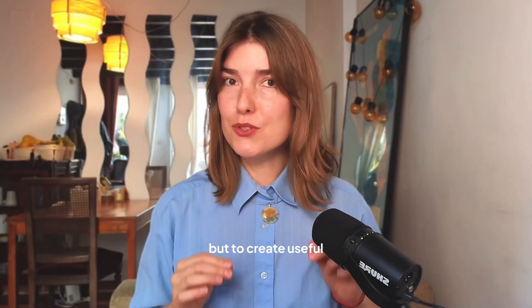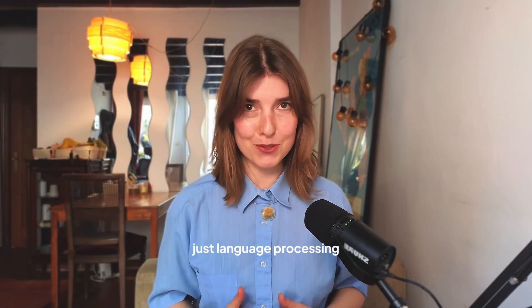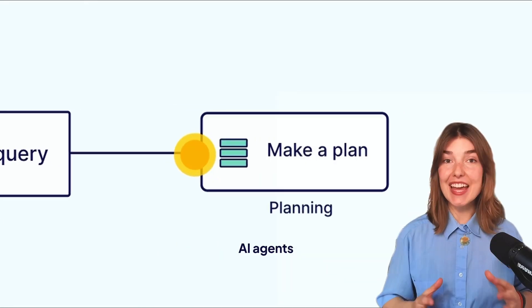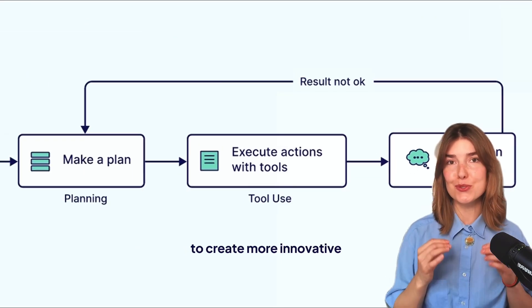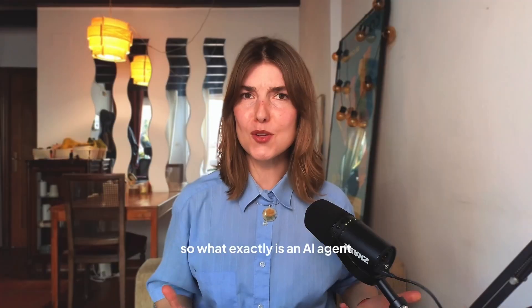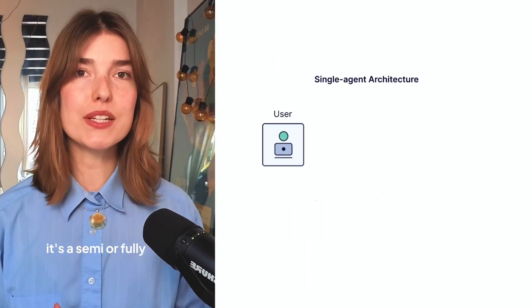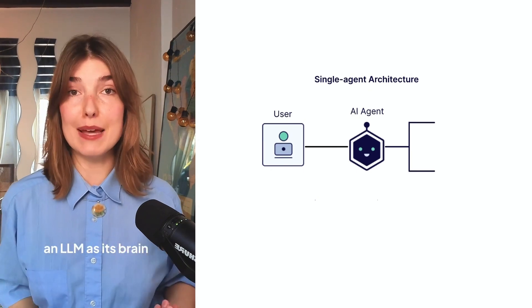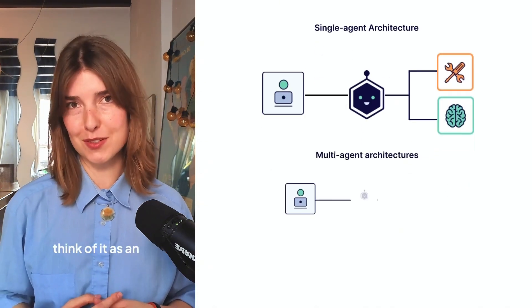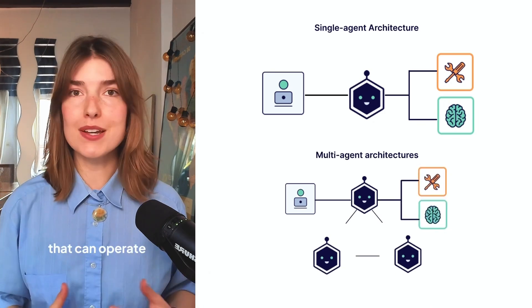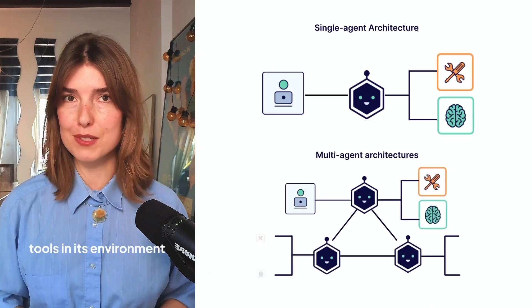Large language models power AI applications that we use daily, but to create useful AI applications we need to go beyond just language processing. Take AI's most recent hype: AI agents, making use of large language models to create more innovative and useful AI applications. At its core, an AI agent is a semi or fully autonomous system that uses an LLM as its brain for critical decision making and solving complex tasks — think of it as an automated decision making engine that can use various tools in its environment to get things done.